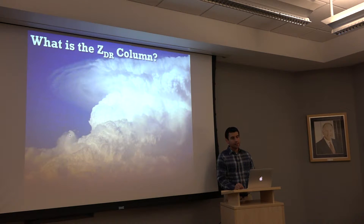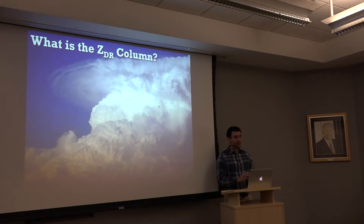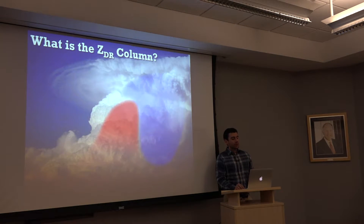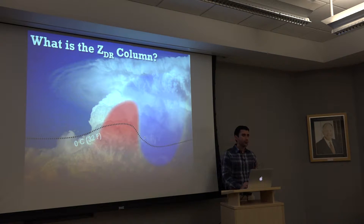What are we talking about with the ZDR column? We'll look at a thunderstorm — a nice cumulonimbus cloud with an anvil. We have our updraft and downdraft regions, and we can imagine an isotherm of about 0 degrees Celsius, 32 degrees Fahrenheit. This is our freezing level or melting level, depending on whether you're looking at the updraft or the downdraft.